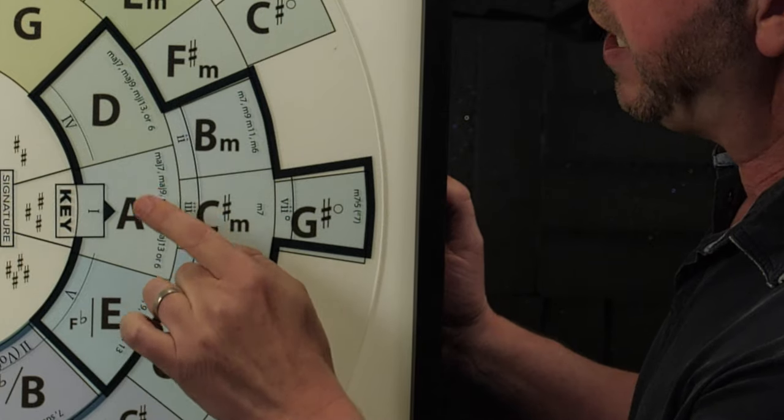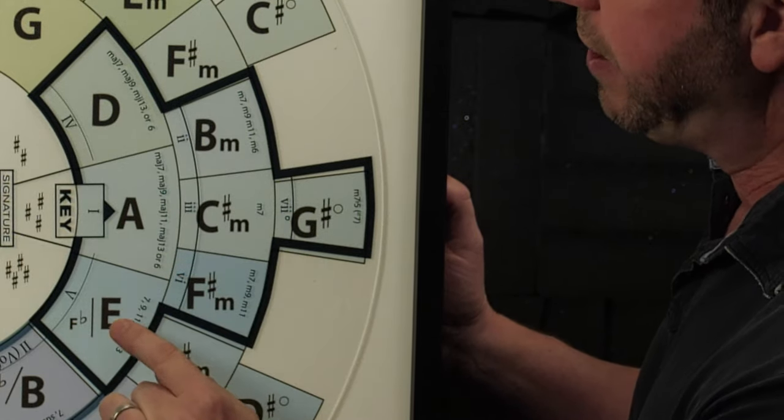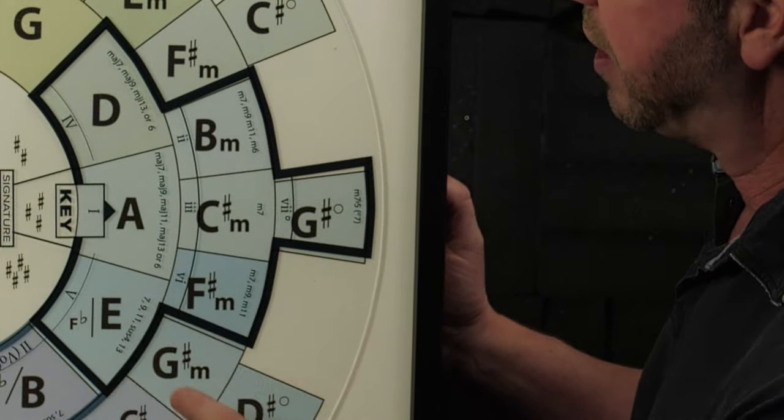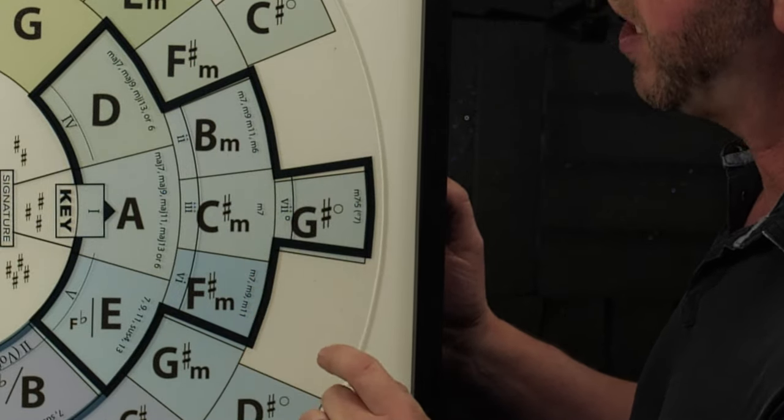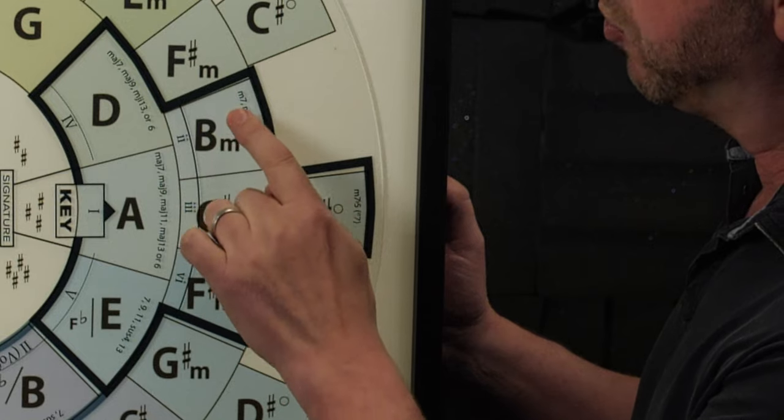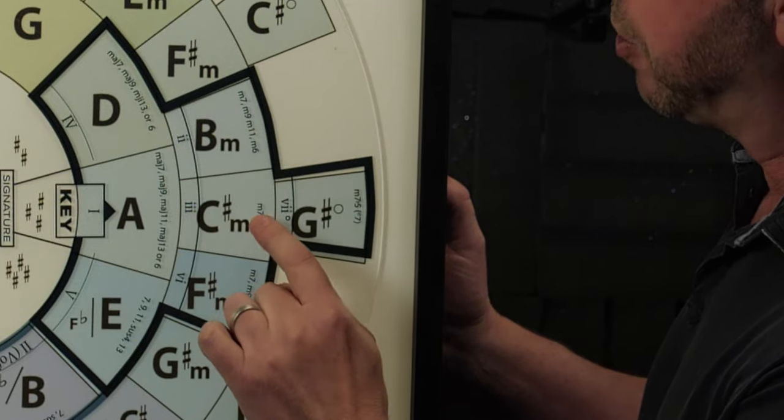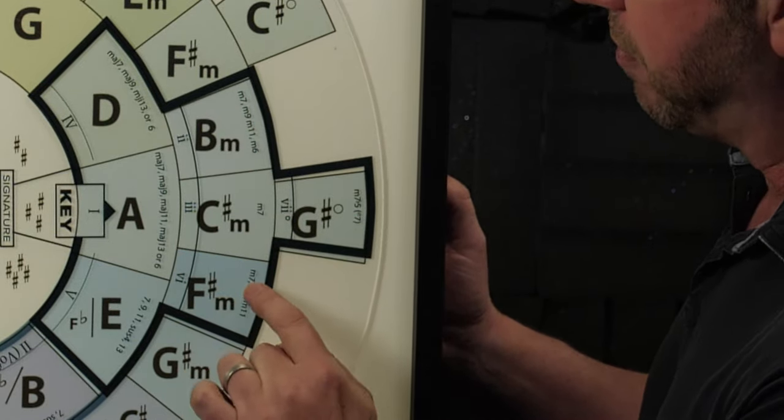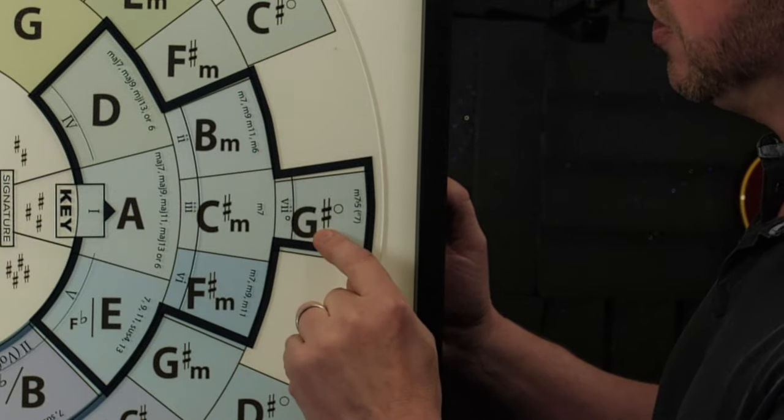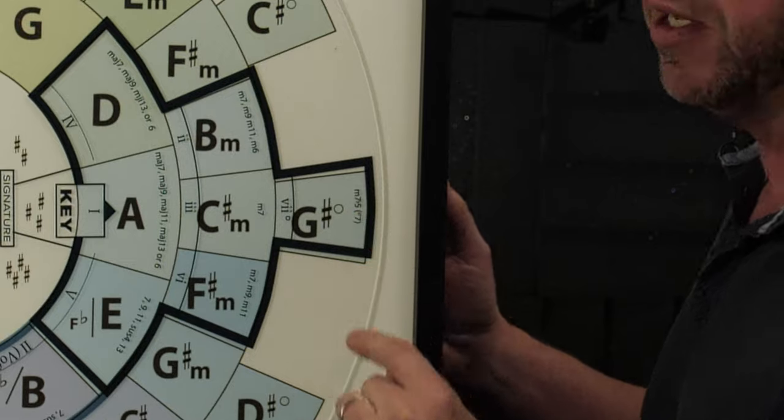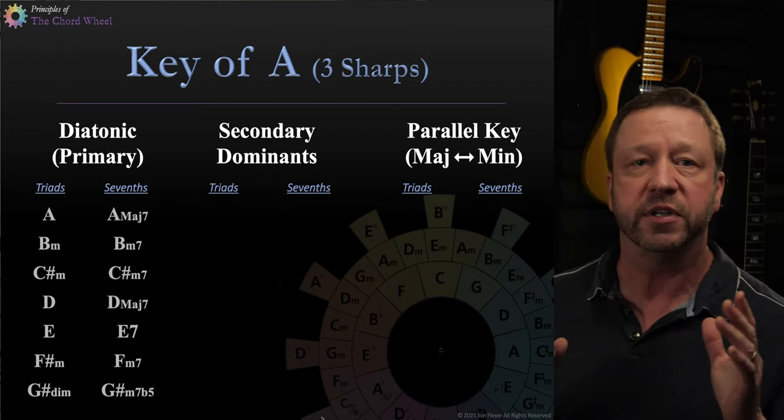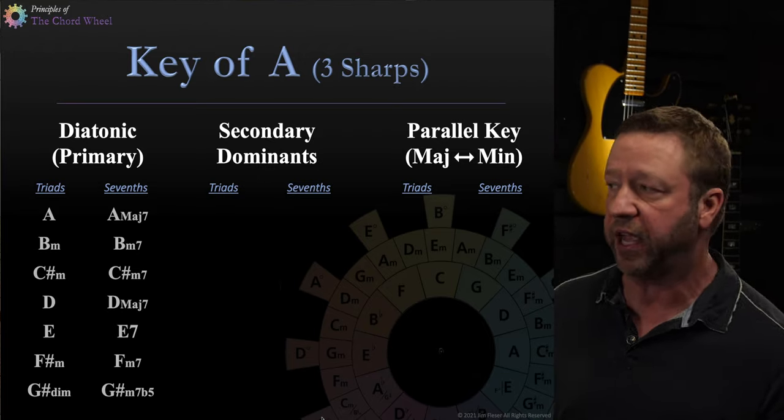The D is a major seventh. The one, A, major seventh. The E, the five, is a dominant seventh. The three minor chords, B minor, C sharp minor, F sharp minor. And B minor would be a minor seventh, C sharp minor, minor seventh, F sharp minor, minor seventh. The seven diminished is a G sharp diminished or a minor seven flat five. So there we have our diatonic chords for the key of A.